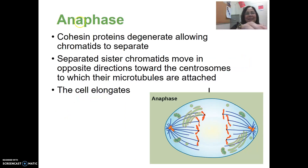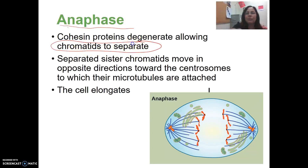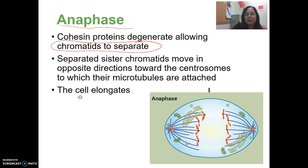In anaphase, the sister chromatids separate as the cohesin proteins degenerate. The sister chromatids move to opposite poles or opposite ends of the cell, and the cell begins to elongate. The cell will not start to form the indention or the cleavage furrow.